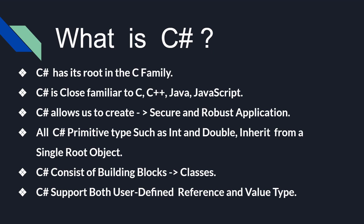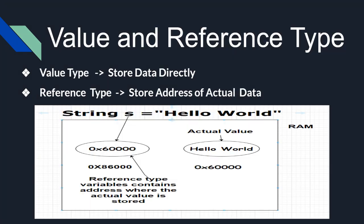All the primitive types such as int and double are inherited from a single root object. The object is the base class for all classes in C#. A class is the building block of C#. C# supports both user-defined reference types and value types.